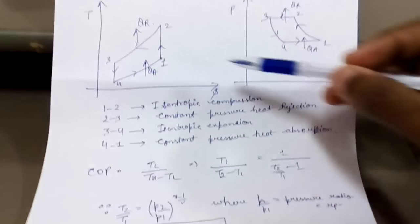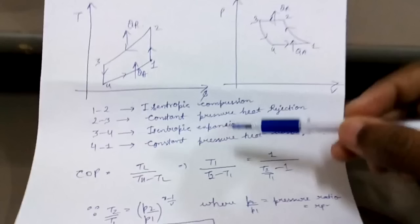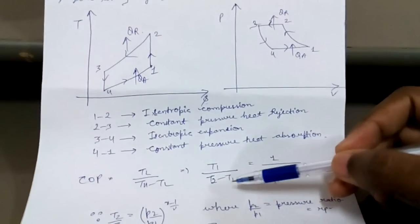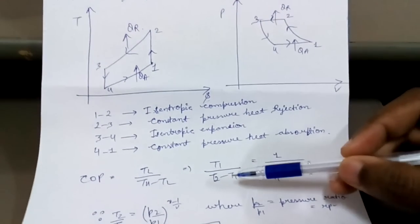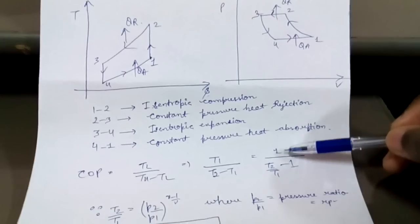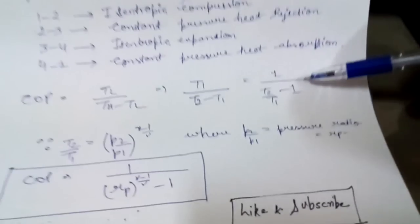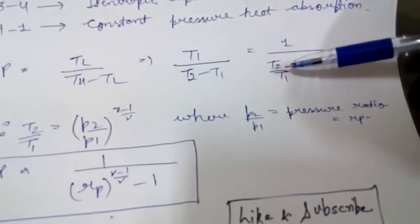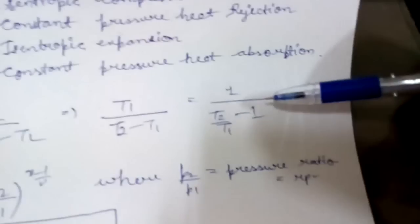So we will be taking T1 and highest is T2. So T1 upon T2 minus T1 equals, dividing numerator and denominator by T1, it becomes 1 upon T2 by T1 minus 1.